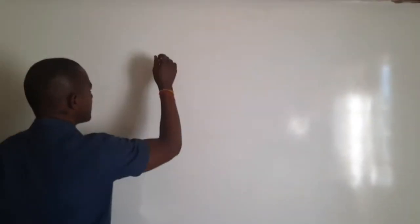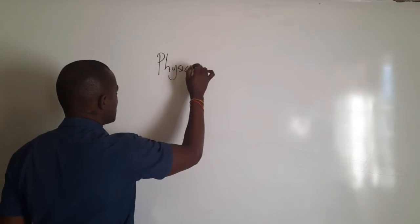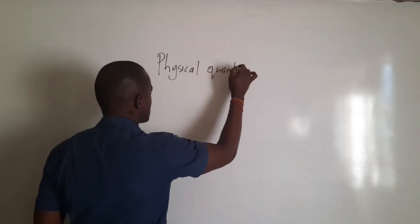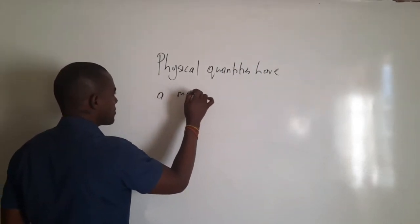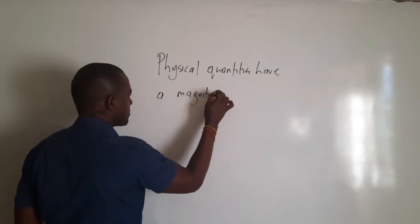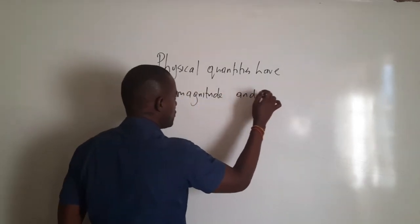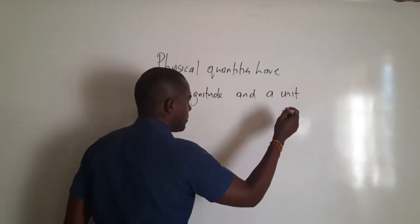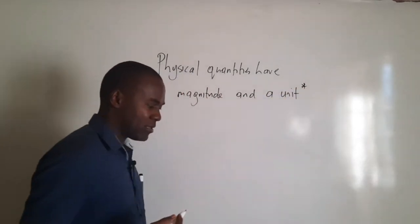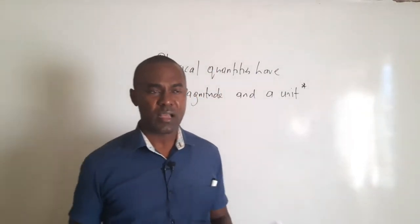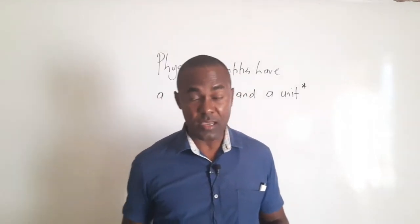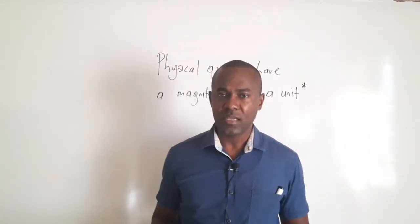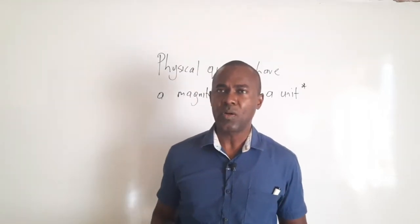Physical quantities have a magnitude and a unit. I'll put an asterisk beside the word unit because, as we'll explain later, not all physical quantities have a unit. Whenever we measure a physical quantity, we must be able to state the magnitude of the physical quantity and the unit, if it exists.